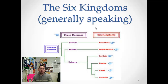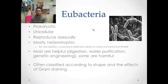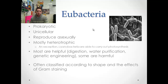We're going to quickly go through an overview of the six kingdoms. I'm not going to go too in depth — just the major talking points of each kingdom. If you want more detail, there are individual screencasts available. The kingdom eubacteria: they're prokaryotic, which means they don't have a true nucleus. They have a nucleoid, circular genetic material, and plasmids.